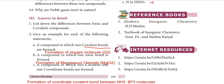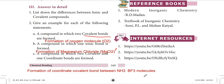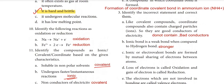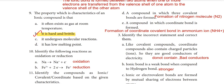Second question — examples of bond types. A: O2 molecule — covalent bond formation. B: a compound in which one ionic bond is formed — that is magnesium chloride, MgCl2. C: a compound in which two covalent and one coordinate bond are formed — formation of covalent bond between NH3 and BF3 molecules. D: a compound in which three covalent bonds are formed — formation of nitrogen molecule, N2. E: a compound in which a coordinate bond is formed — formation of coordinate bond in ammonium ion, NH4+.